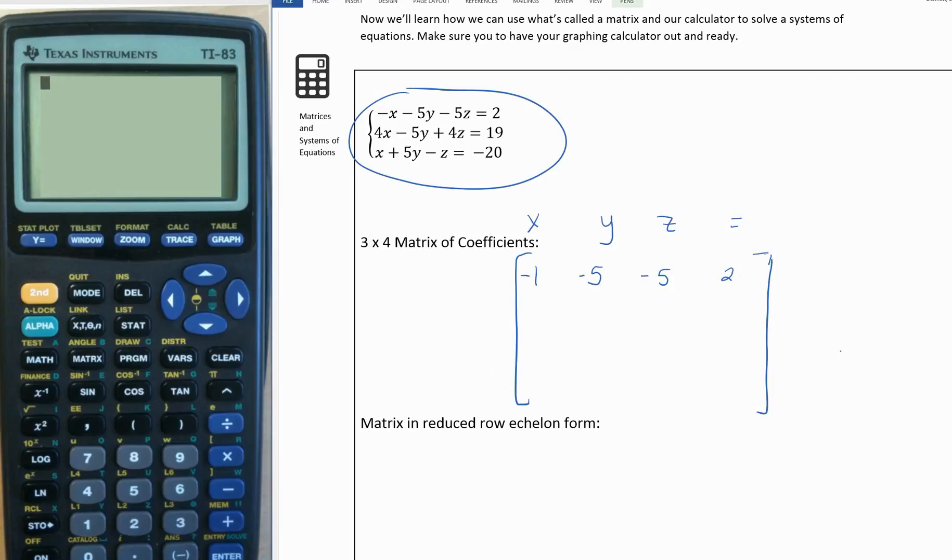Going down, we have equation 1, equation 2, and equation 3, which are called our rows. We talk about the dimensions of a matrix as the rows by columns. Since we have three rows here by four columns, this is a 3 by 4 matrix.